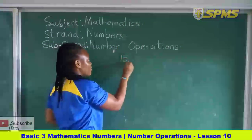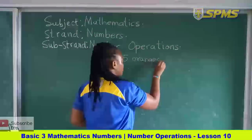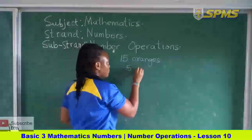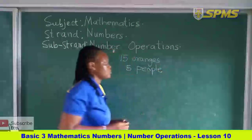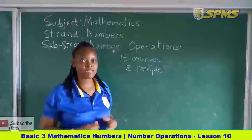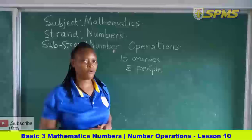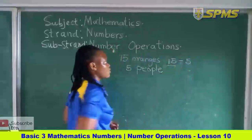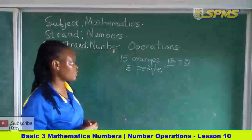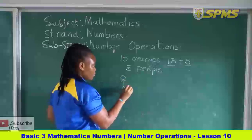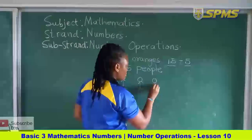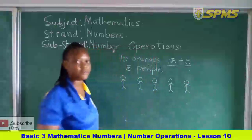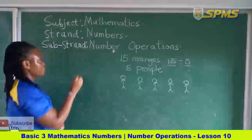Let us look at another example. I have fifteen oranges and five people have to share the fifteen oranges. We are going to use repeated subtraction to find the answer for the division sentence fifteen divided by five. So I have my five people and my fifteen oranges here as well.